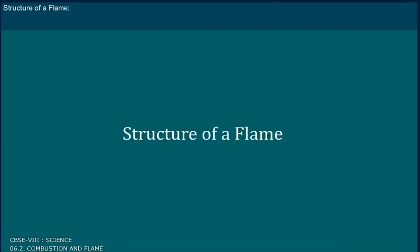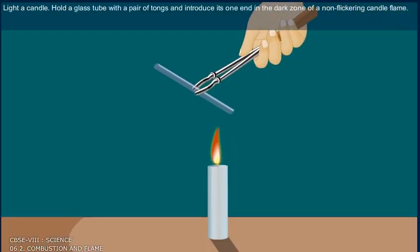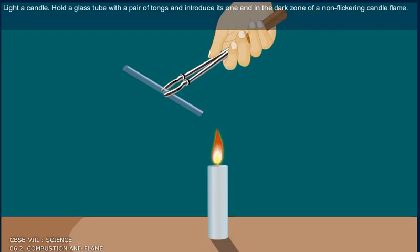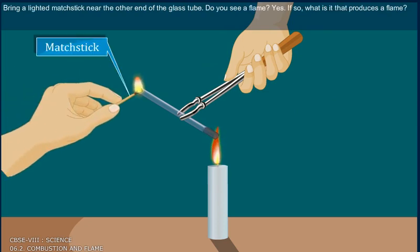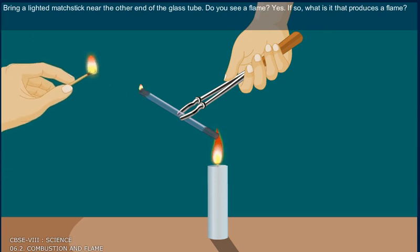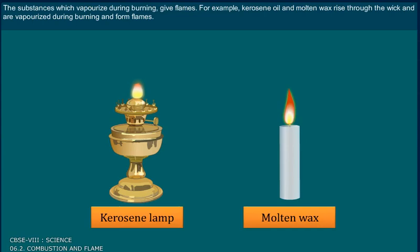Structure of a Flame. Light a candle, hold a glass tube with a pair of tongs and introduce one end into the dark zone of a non-flickering candle flame. Bring a lighted matchstick near the other end of the glass tube. Do you see a flame? Yes. What produces a flame? The substances which vaporize during burning give a flame. For example, kerosene oil and molten wax rise through the wick, are vaporized during burning, and form flames.